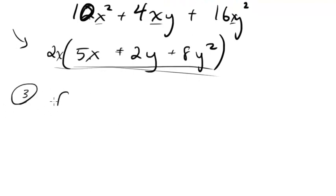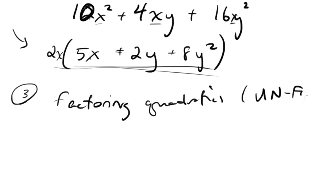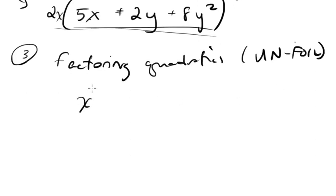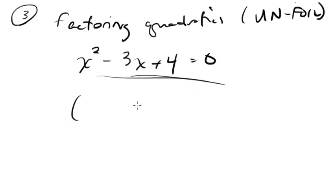Finally, number three will be factoring quadratics, or unfoiling, if you're familiar with the FOIL acronym, first, outside, inside, last. But basically, you're going to have some quadratic like this. And you've got to be equal to 0. And you've got to find the roots of it. You've got to find the cases in which this guy equals 0. Or you can just factor it out. Normally, it doesn't necessarily have to equal 0. But often, you'll see it in this context where it equals 0.